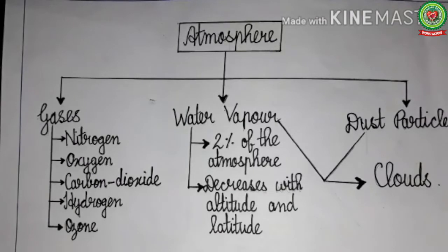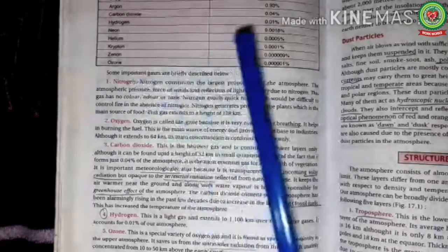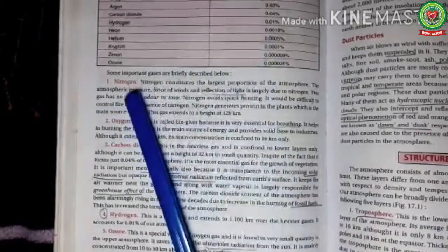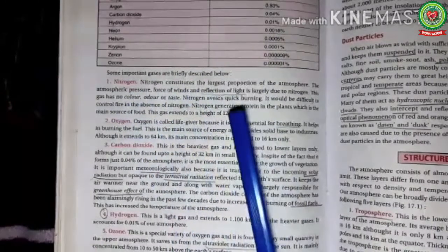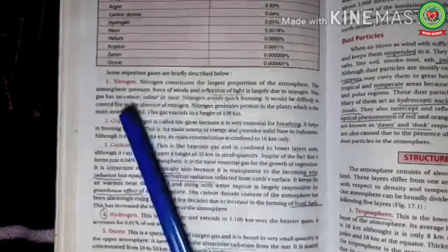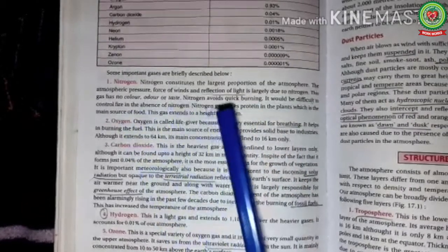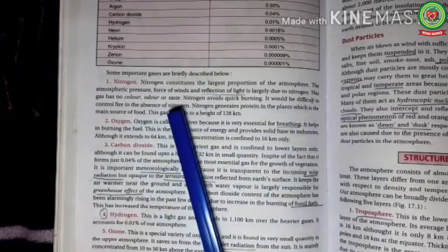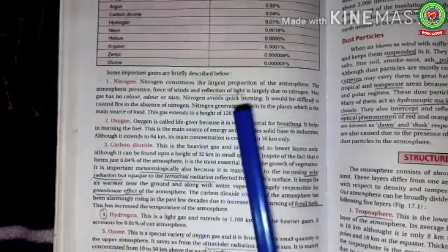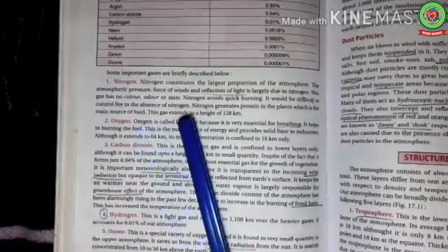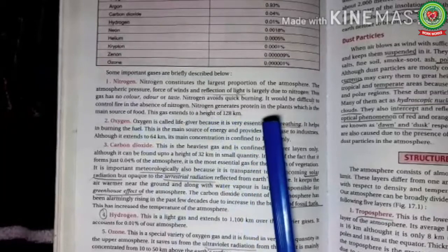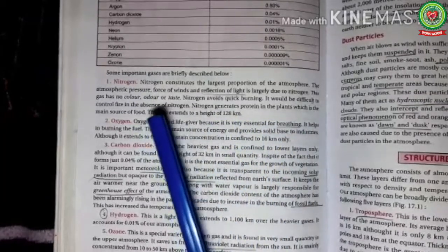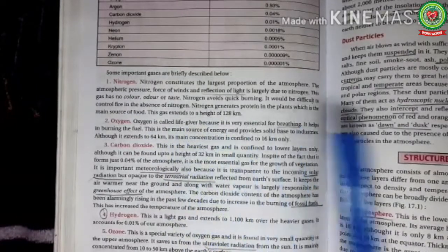Now we will discuss the importance of various gases, water vapor and dust particles. Nitrogen accounts for about 78% of the total volume of the atmosphere. Atmospheric pressure, force of wind, and reflection of light are largely due to nitrogen. This gas has no colour, no odour, and no taste. Nitrogen avoids quick burning, so it would be difficult to control fire in the absence of nitrogen. Nitrogen generates protein for plants, which is the main source of food. This gas is found up to a height of 128 km in the atmosphere.